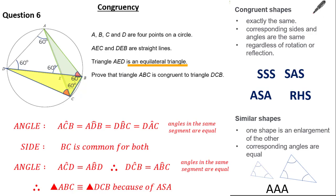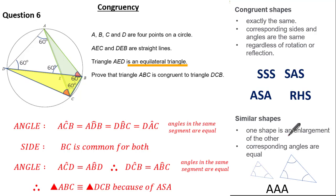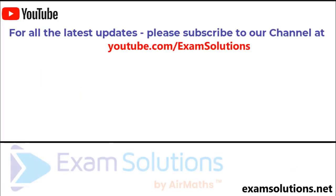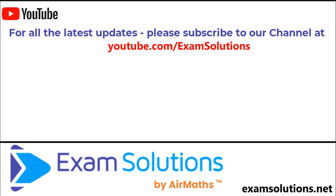In summary, congruent shapes are exactly the same — corresponding sides and angles are equal regardless of orientation, rotation, or reflection. The four conditions for congruent triangles are SSS, SAS, ASA, and RHS. Similar shapes are enlargements of each other with equal corresponding angles but different lengths. For proofs, label what you know from the question, identify the right condition, and prove each part of that condition.